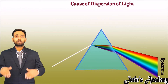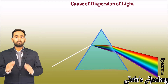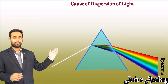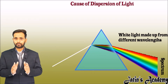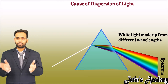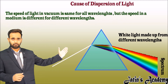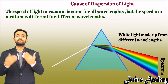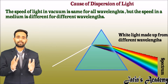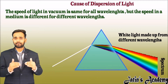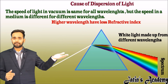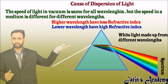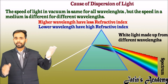Now let us understand the cause of dispersion of light. White light is made up of different wavelengths of light. The speed of these wavelengths is the same in vacuum. When light enters the glass prism, each wavelength experiences a different refractive index. A higher value of wavelength experiences less refractive index, and a lower value of wavelength experiences more refractive index.